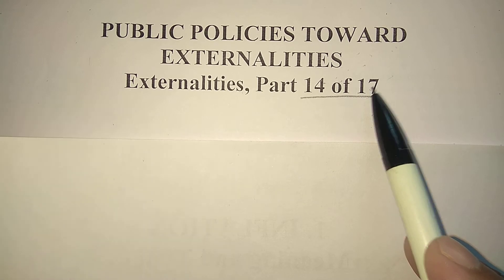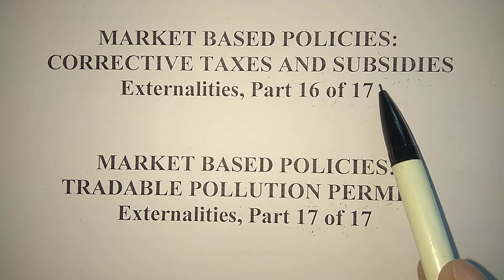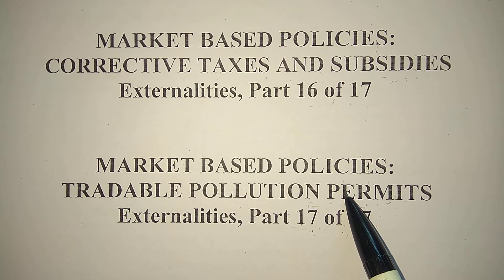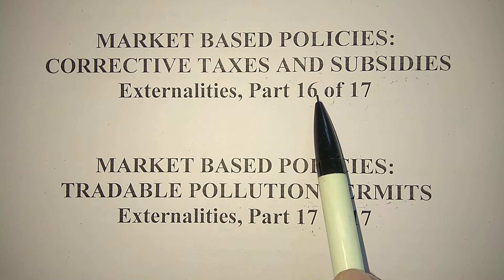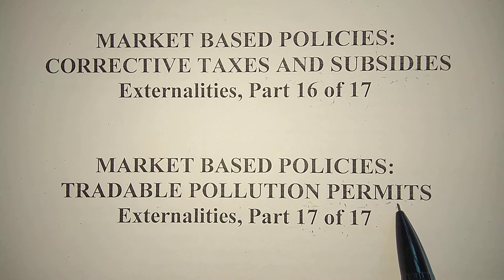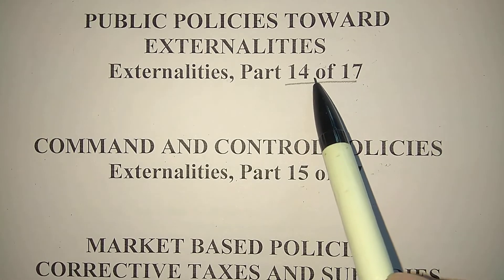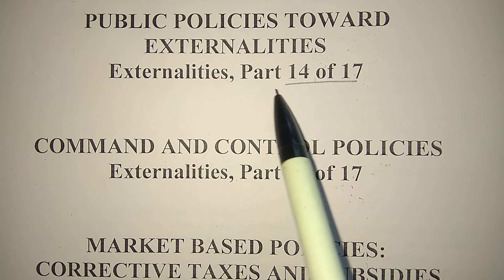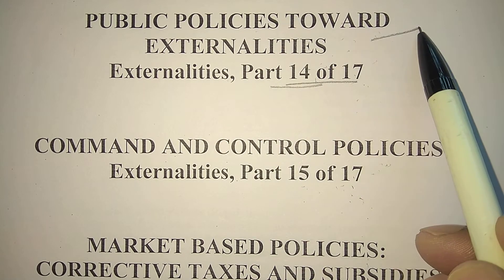Here in part 14 we will discuss public policies toward externalities. Part 15 is related with command and control policies. Parts 16 and 17 are related with market-based policies — corrective taxes and subsidies are explained in part 16, and tradable pollution permits are explained in part 17.